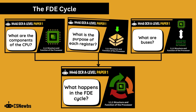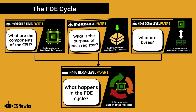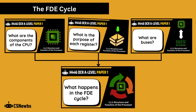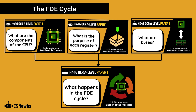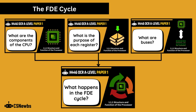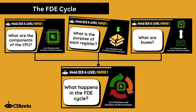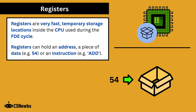This is the second topic on our journey of completely understanding what happens in the Fetch Decode Execute cycle, and it's definitely the most important. Registers are very fast temporary storage locations inside of the CPU used during the FDE cycle. Registers can hold an address, a piece of data such as 54, or an instruction such as ADD.